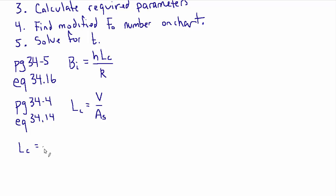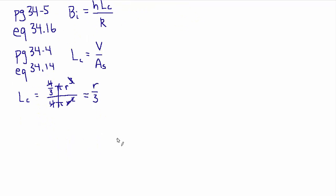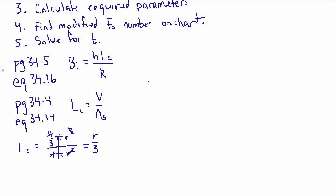Let's work that out for a sphere. LC for a sphere is going to be the volume of a sphere which is four-thirds pi r cubed. And the surface area of a sphere is four pi r squared. If you cancel out two r's with r cubed and the pi's go away and the four's go away, you end up with r over three. So one-third of the radius is the characteristic length for a sphere.